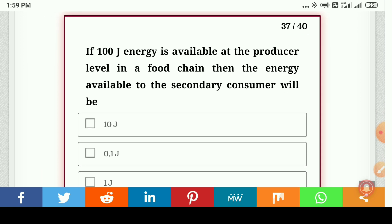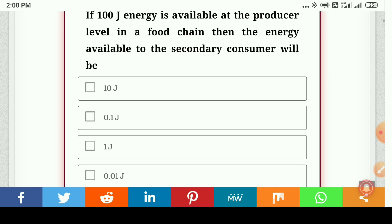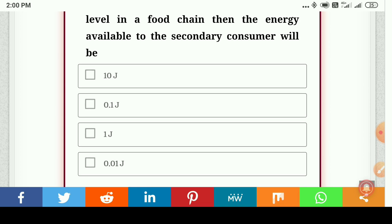If 100 joule energy is available at the producer level in food chain, then the energy available to the secondary consumer will be 10 joule, 0.1 joule, 1 joule, or 0.01 joules. Your answer is one joule.